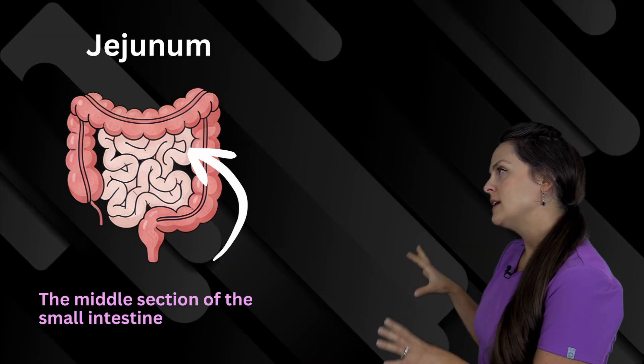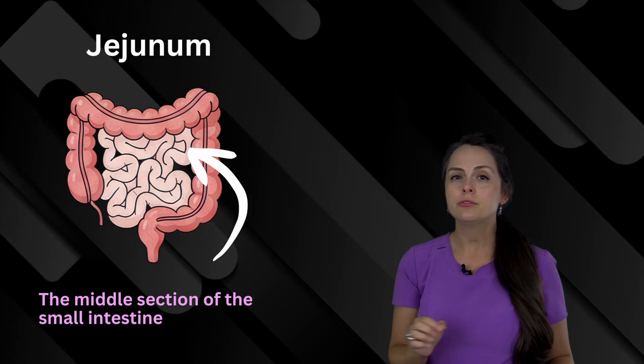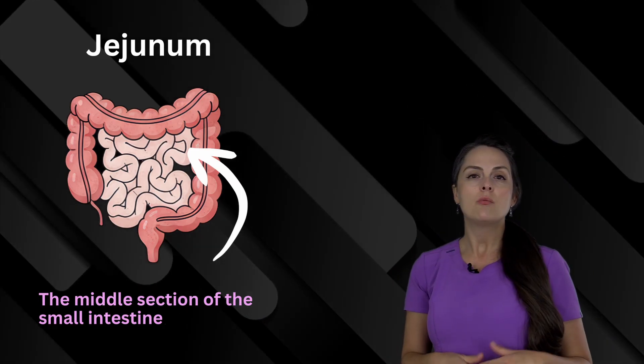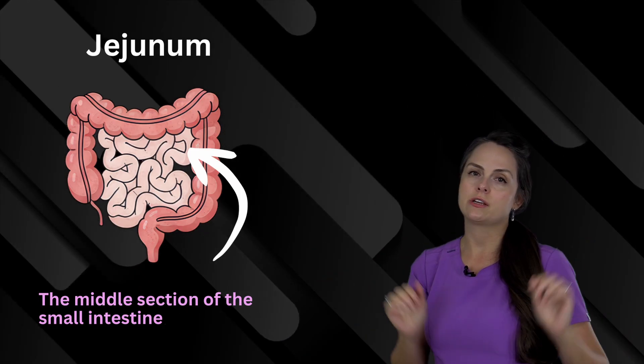Then we have another intestinal word called the jejunum, and this is actually the middle part of the small intestine, and this is where the site of nutrient absorption occurs.